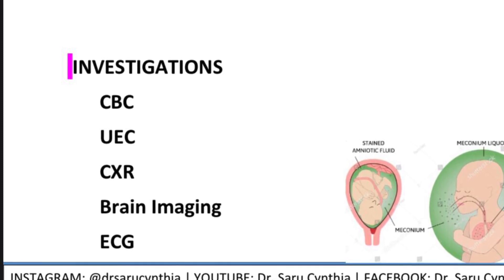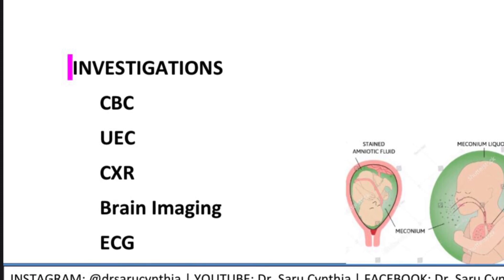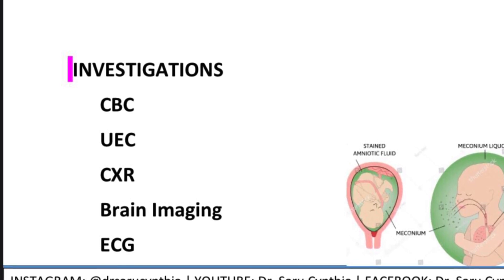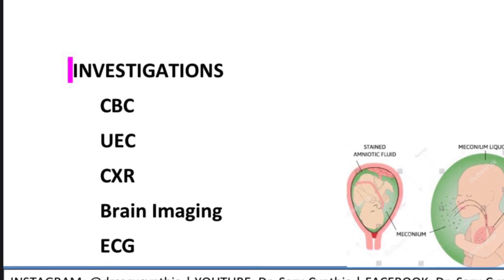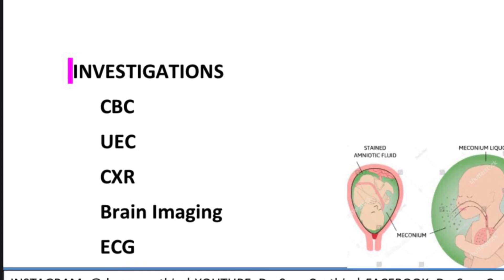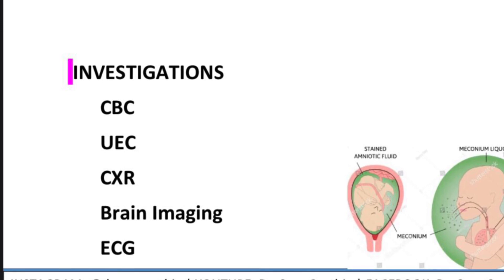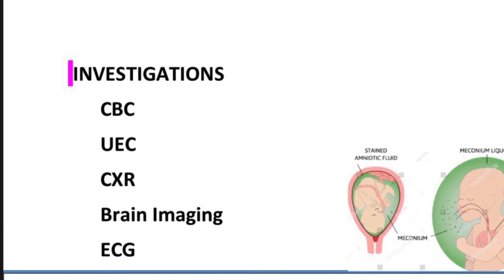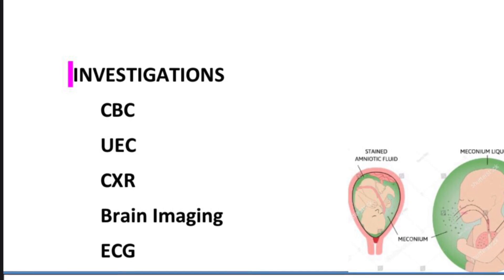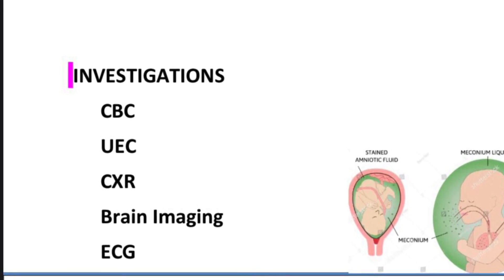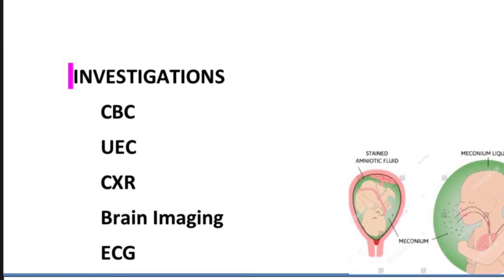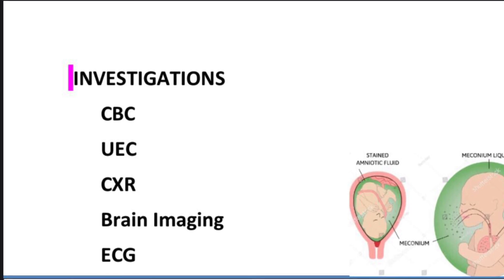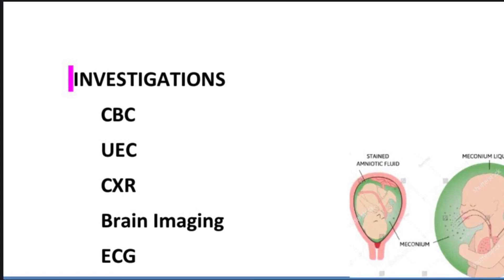Brain imaging is also important — since hypoxia is the main culprit leading to MAS, it can also damage the brain. So it's good to do either a cranial ultrasound, CT scan, or MRI, whichever is available or recommended in collaboration with your consultant. An ECG is also useful to determine pulmonary hypertension and to differentiate MAS from transposition of the great arteries, which is also a differential diagnosis. Please comment other differential diagnoses below.